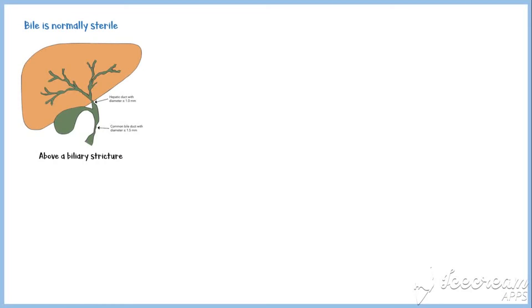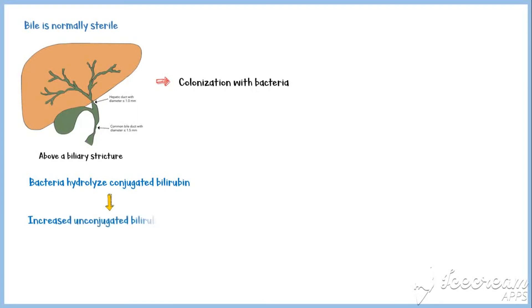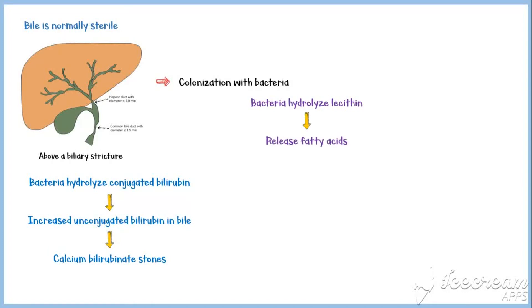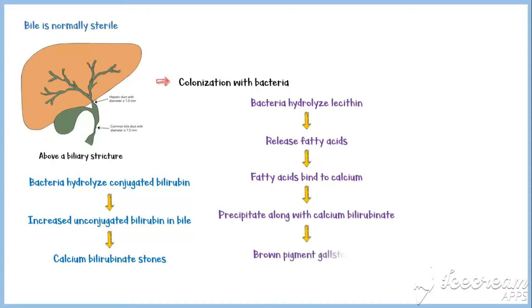Bile is normally sterile. But in some unusual circumstances, such as in biliary strictures where the flow of bile is obstructed, it may become colonized with bacteria. These bacteria hydrolyze conjugated bilirubin to form unconjugated bilirubin, which may increase the tendency of calcium bilirubinate gallstone formation. In addition, these bacteria hydrolyze the lecithin component in bile, releasing large amounts of free fatty acids. Similar to unconjugated bilirubin, fatty acids also bind to calcium and precipitate along with calcium bilirubinate. Stones formed in this manner are called brown pigment gallstones.